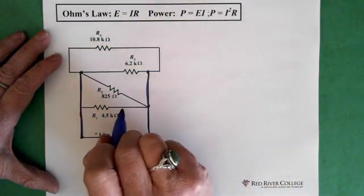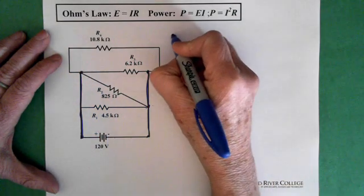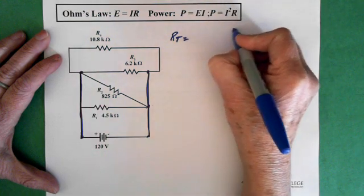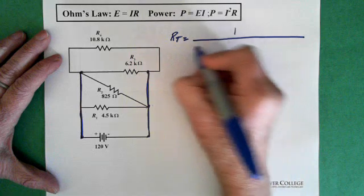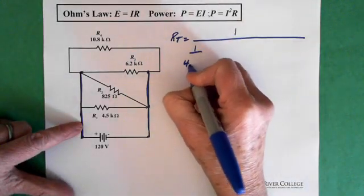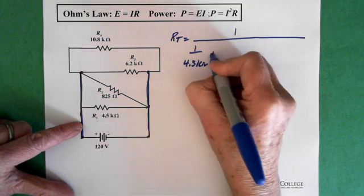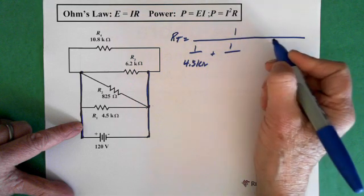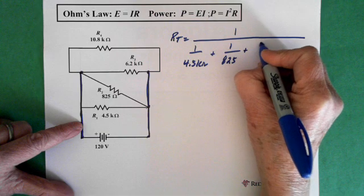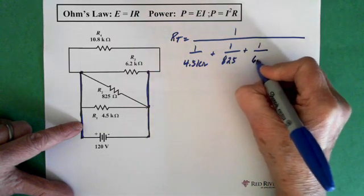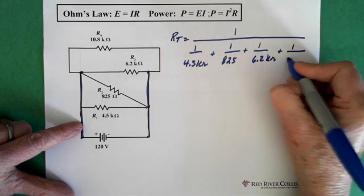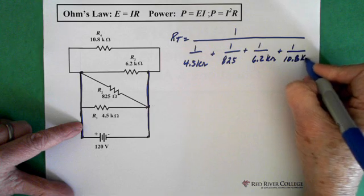So then we can solve for the total resistance for this circuit. And we use our formula for resistance in a parallel circuit. So here we have 1 over RT equals 1 over resistor 1, which is 4.5 kilohms, plus 1 over resistor 2, which is 825 ohms, plus 1 over 6.2 kilohms, plus 1 over 10.8 kilohms.